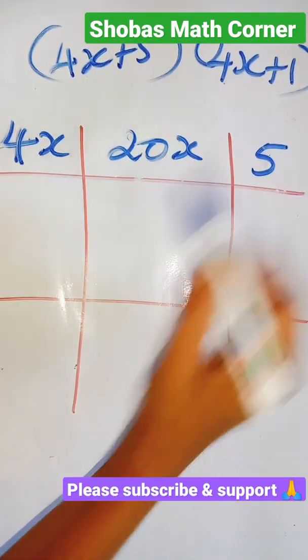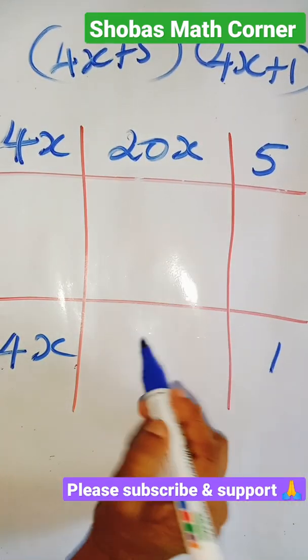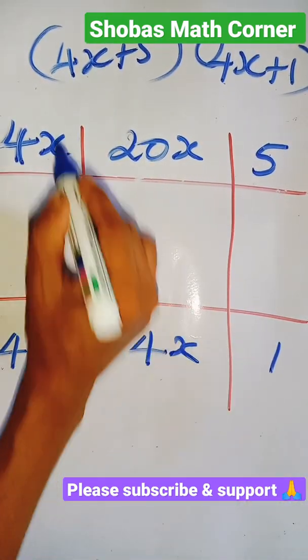Then take the next term: 4x plus 1. I am writing down 4x and 1. Multiply these two. 1 into 4x is 4x. Here you should multiply the sides.